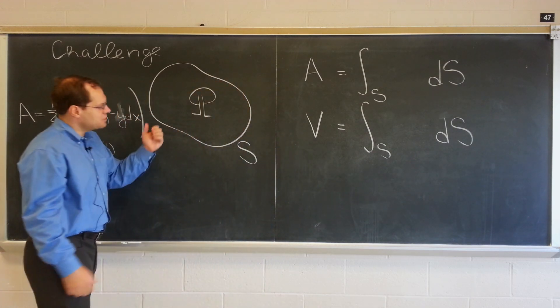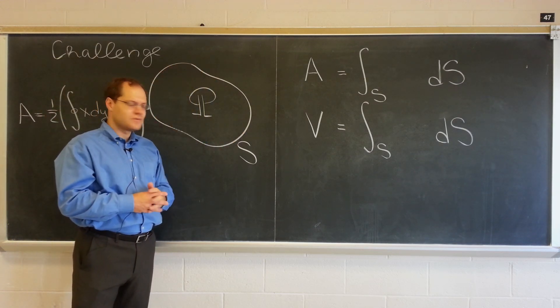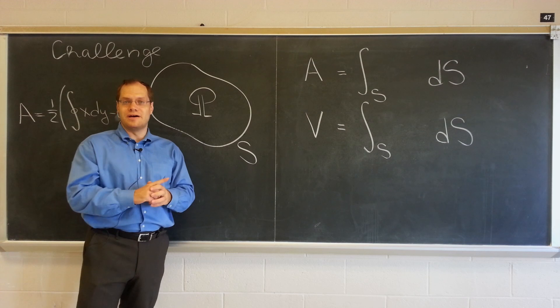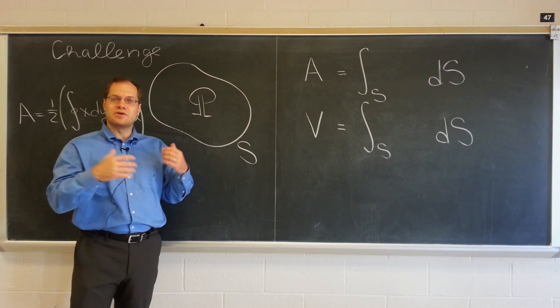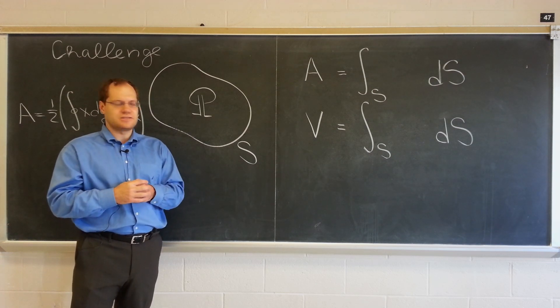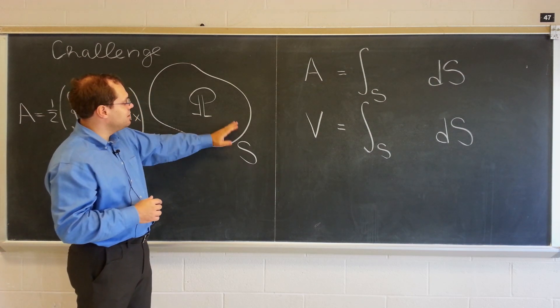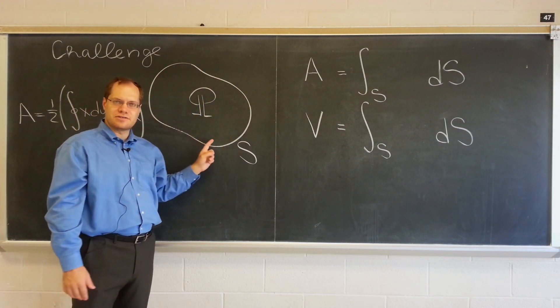So for volume, you can say if this was a domain integral, you could say that it's just the integral of one. The integral of one d omega, of course, equals area in two dimensions, volume in three dimensions. But that would be a domain integral. And I want a boundary integral.